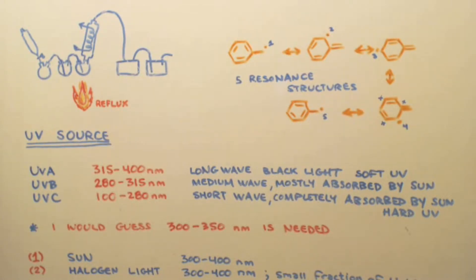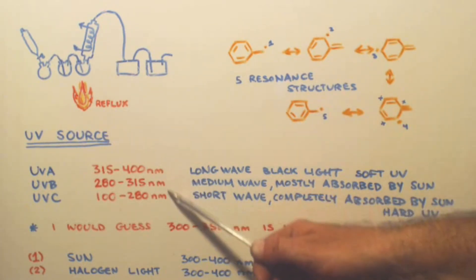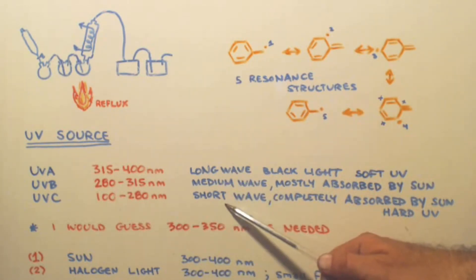Anyways, let's get into UV sources. Now, let's go over UVA, UVB, and UVC first. Those are the three types of UV waves, and here's the nanometers they are. Long wave, medium wave, short wave. This is the shortest one. Long waves are like black lights, soft UV. Most of that, if not all of it, makes it through the ozone layer to us. B, this is the medium wavelength. It mostly is absorbed by the sun. Only a little bit of that comes through. And, the short wave is completely absorbed by the sun or by the ozone. It's called hard UV.